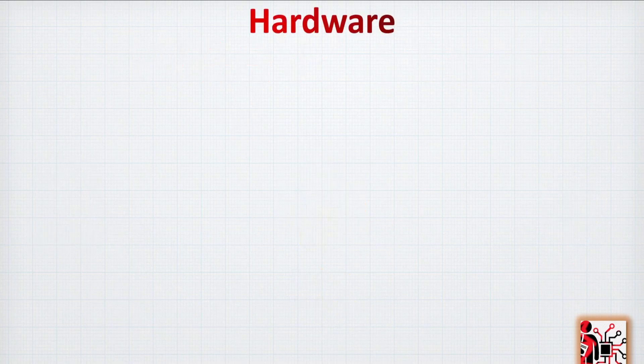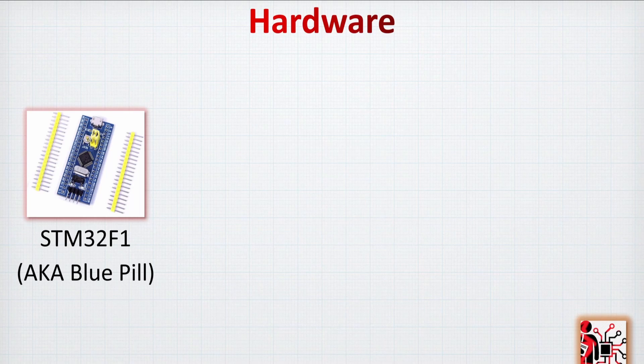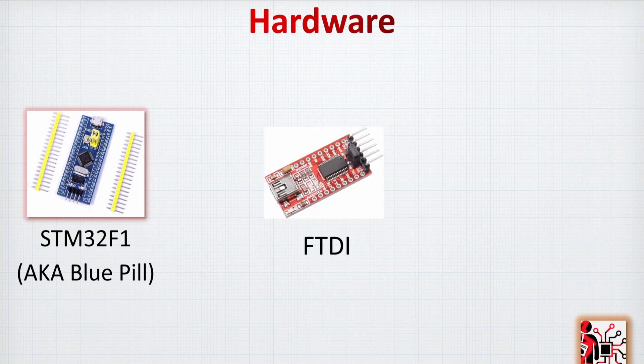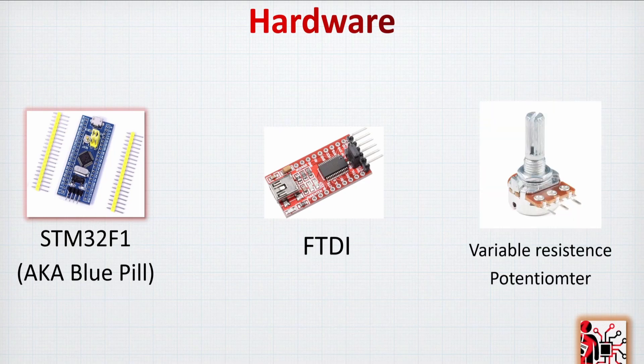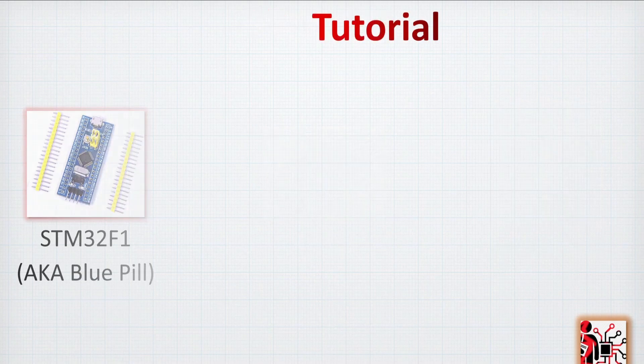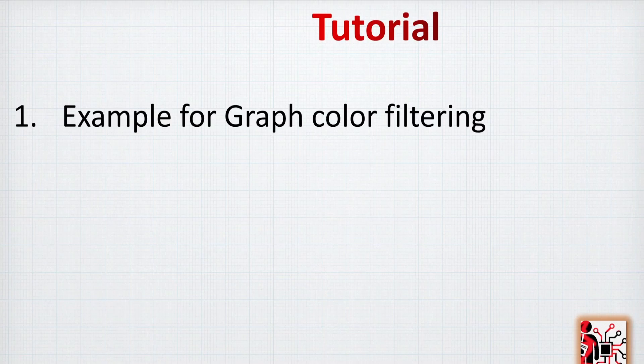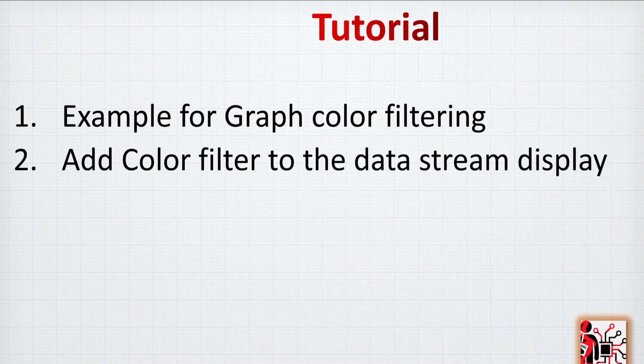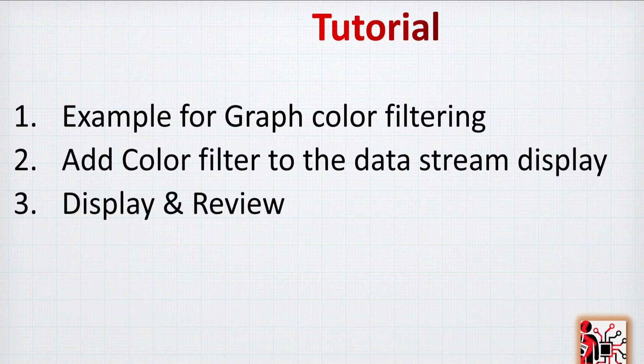From a hardware perspective we have the STM32F1 based board, also known as the blue pill, which will generate a signal. We are going to use an FDTI to interface the UART message with a PC, and a potentiometer or variable resistance to play with the signal. From the tutorial perspective, we will have an example for graph color filtering: a simple graph showing how to apply different colors based on values, then we will add the color filter to the data stream display, and finally review it directly in our user interface.